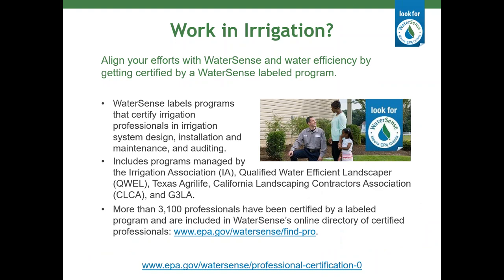If you're an irrigation professional, consider one of our WaterSense-labeled certification programs. These programs offer certification in irrigation system design, installation and maintenance, and irrigation system auditing. Currently over 2,800 professionals have been certified by WaterSense-labeled programs across the country. These certified irrigation professionals are listed in our directory of certified professionals on the WaterSense website, and if you're a property manager looking to improve your landscape, you can use the directory to search for an irrigation contractor in your area.